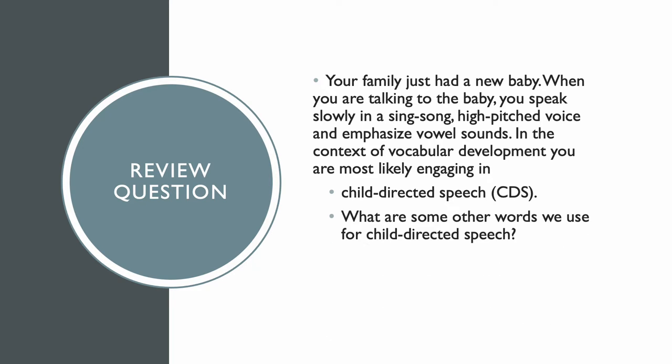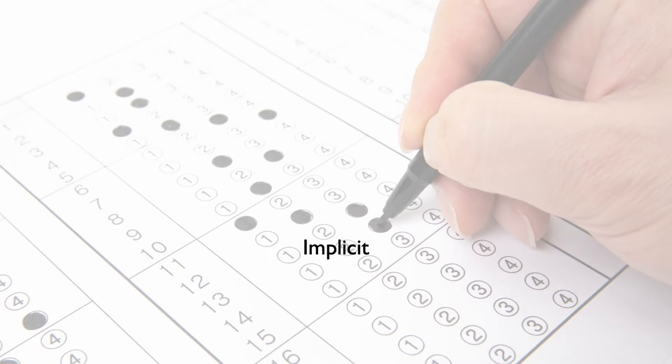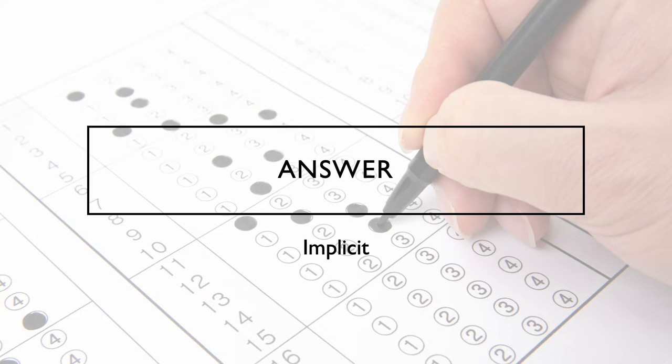What are some of the other words we use for child-directed speech? We also sometimes call it motherese or parentese. Let's try another one. Blank memory refers to remembering that occurs without effort or even conscious awareness, such as knowing how to tie your shoes. The answer is implicit.